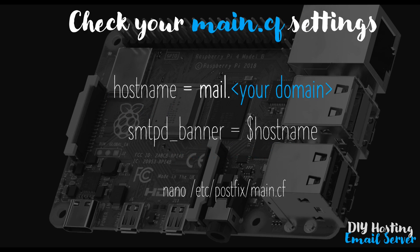It's very likely the smtpd_banner will be set to mail dot your domain. It's very likely that your Postfix configuration is already correct and is already matching up to your pointer record that you've asked your ISP to set up, but it's best to check. If you navigate to /etc/postfix/main.cf, using nano if you like, you'll find somewhere in there two lines. One says hostname and one says smtpd_banner. Your hostname should equal mail dot followed by your domain — in my case, mail.single-entity.com. You'll notice this is exactly the same as what your pointer record will be, and that's the important part.